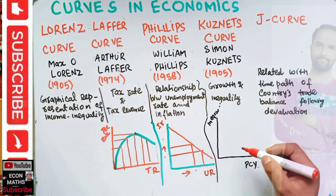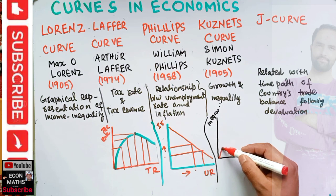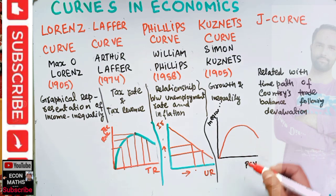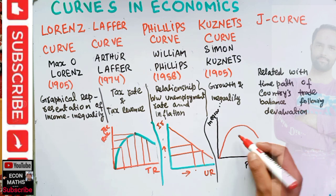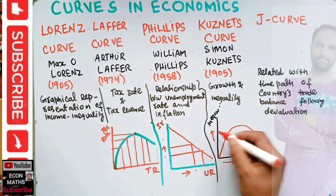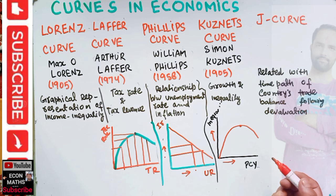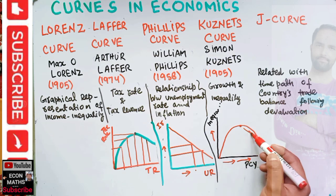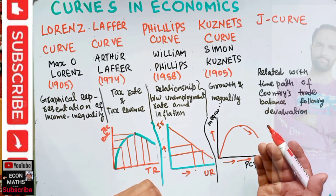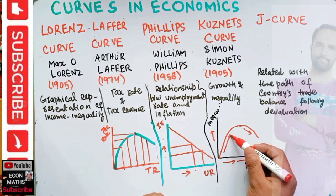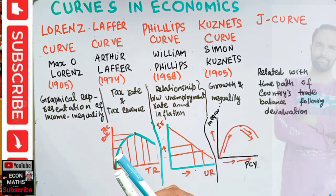The Kuznets curve shows that as an economy develops, market forces first increase and then decrease economic inequality. Initially, with economic growth, income inequality will increase. But after reaching a certain threshold level of per capita income, if income continues to increase, inequality will start to decrease. So inequality first increases, then decreases over time.